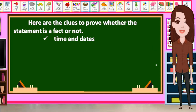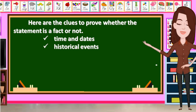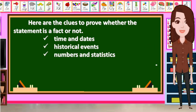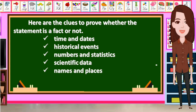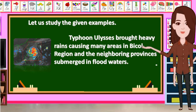The clues to identify a fact include: time and dates, historical events, numbers and statistics, scientific data, names and places, references, and documents.